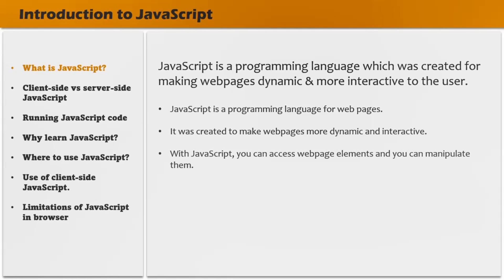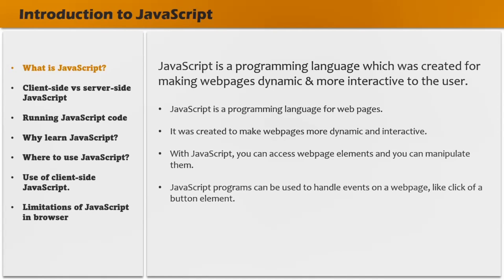With JavaScript, you can access web page elements like the button element or the input element and you can manipulate them. JavaScript programs can also be used to handle events like the click of a button. So when a button is clicked on the web page, you might want to show an alert message or submit a form. Those things can be handled using JavaScript code.